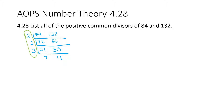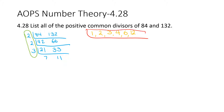So all the positive common divisors don't have to be just prime numbers — they are all the numbers you can make with 2, 2, and 3. So there's 1, 2, 3, 4 because 2 times 2 is 4, 6 from 2 times 3, and 12 from 2 times 2 times 3. So these are all the positive common divisors of 84 and 132.